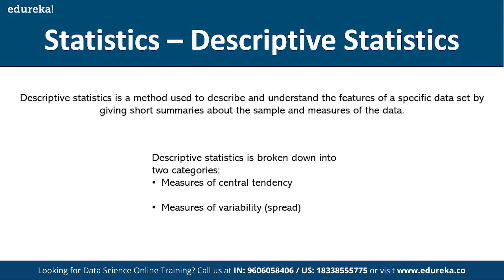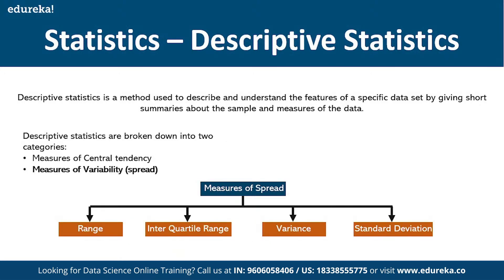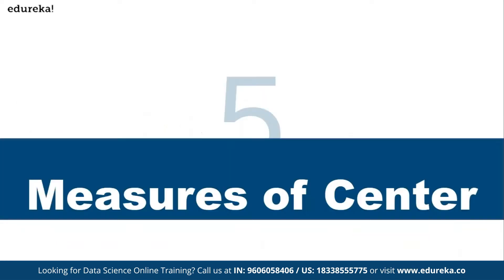Descriptive statistics includes measures of central tendency — mean, median, and mode — where you represent the entire data using a midpoint value. It also includes measures of variability, which tell you how spread out the data is from the mean. Measures of variability include standard deviation, variance, range, and interquartile range (IQR).